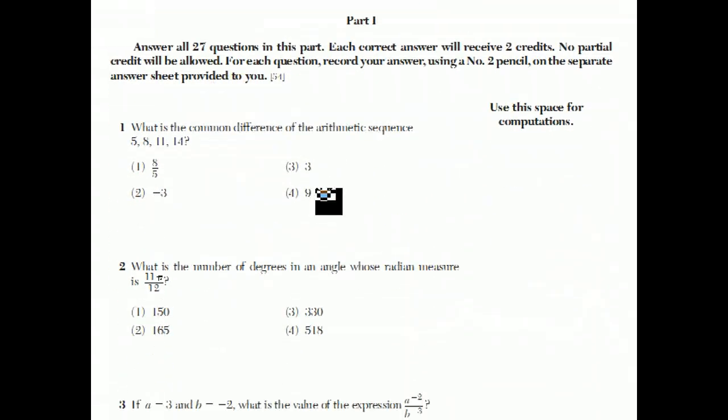The part ones are worth two points each, there's no partial credit on these part ones, so you want to be extra careful that you don't make a careless mistake and lose full credit. The first question says, what's the common difference of the arithmetic sequence 5, 8, 11, 14?